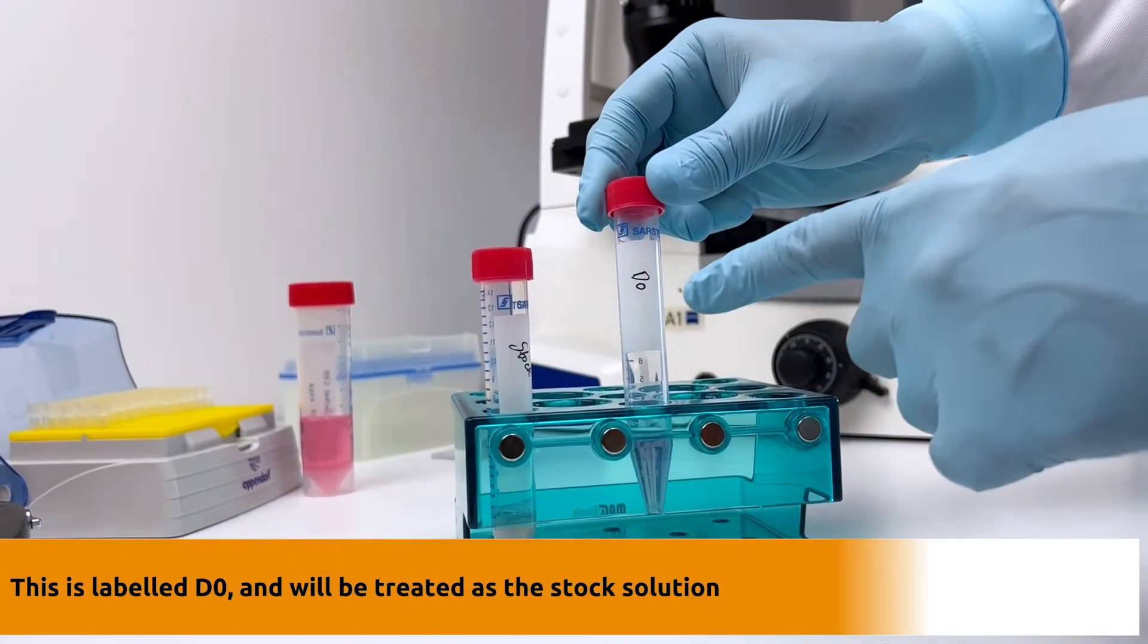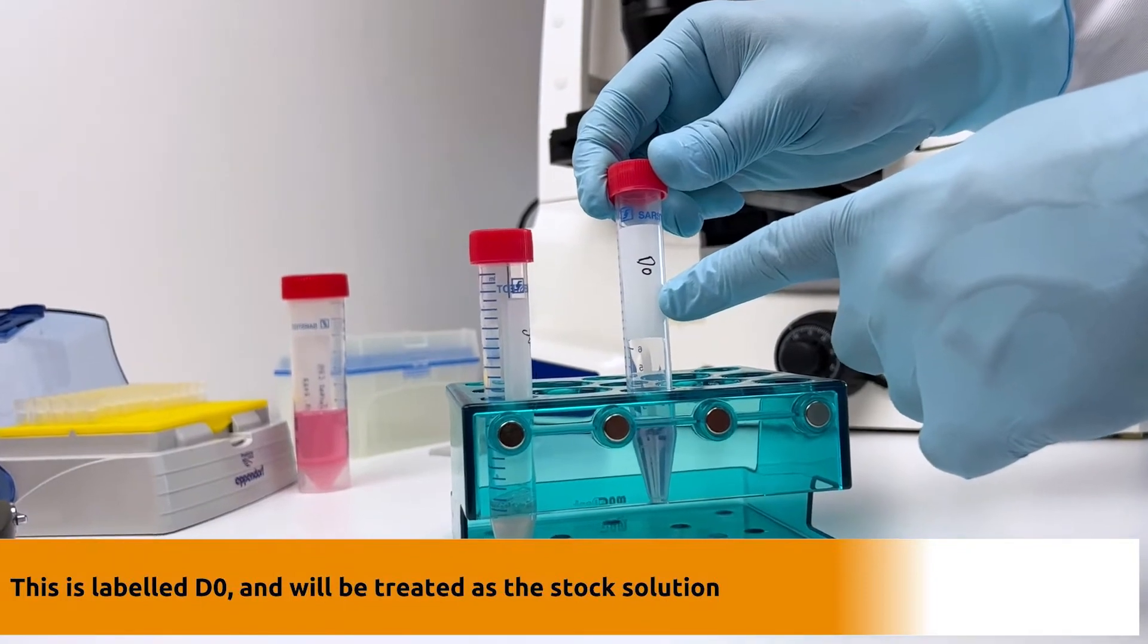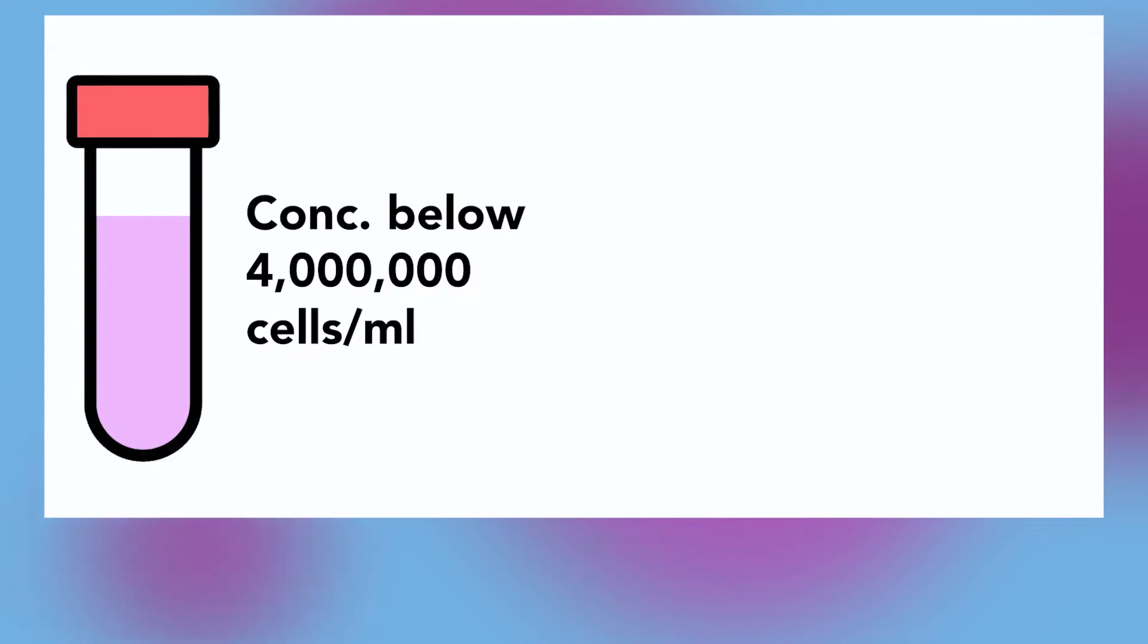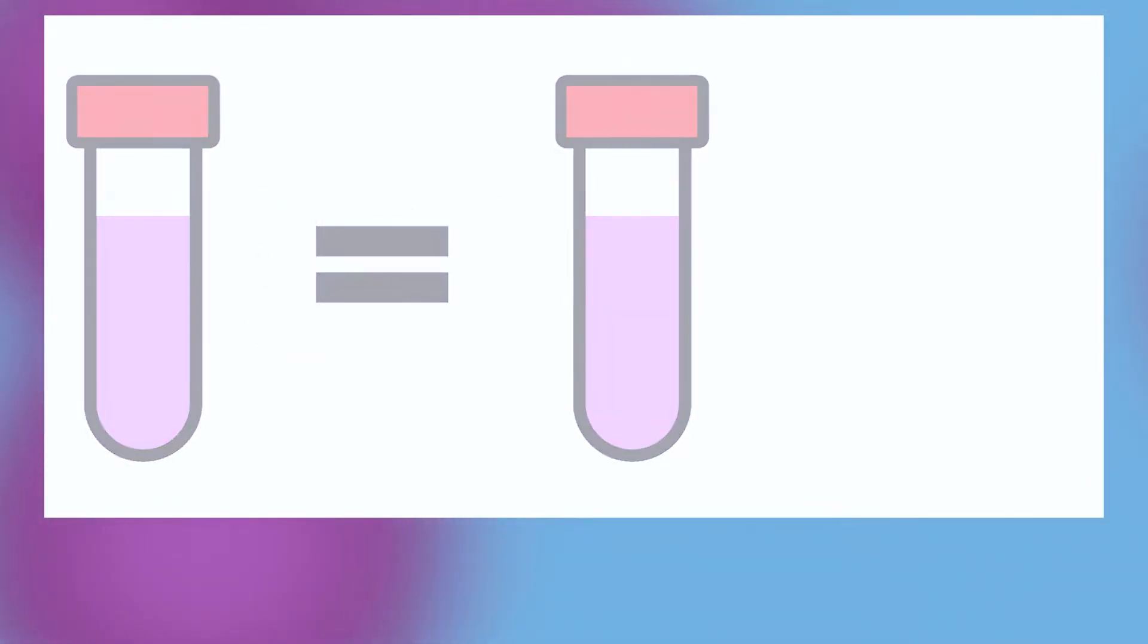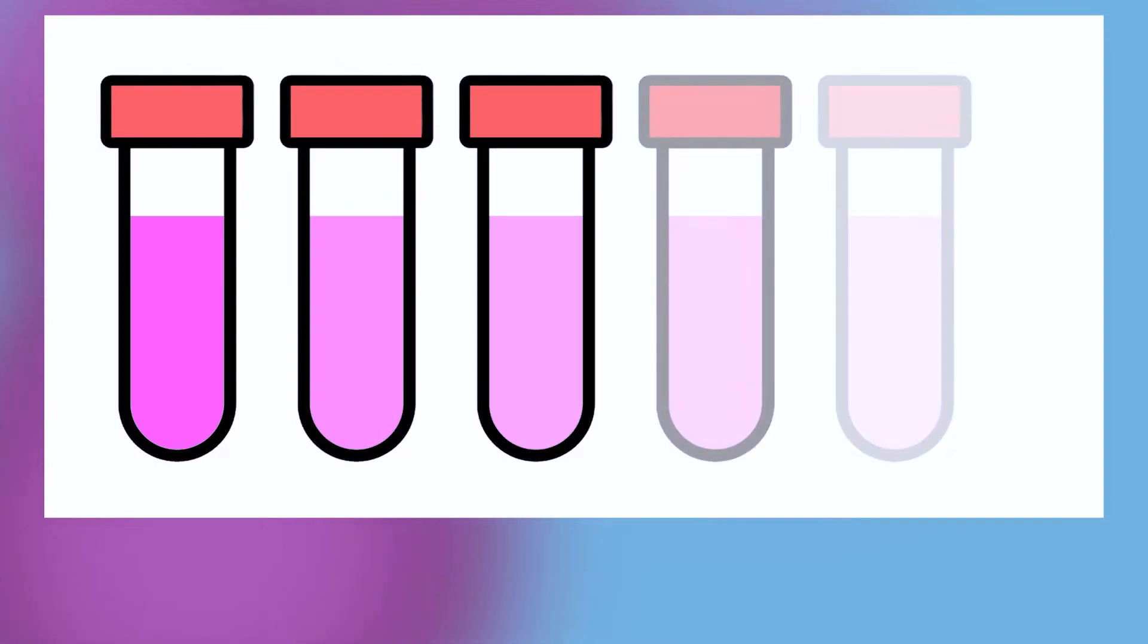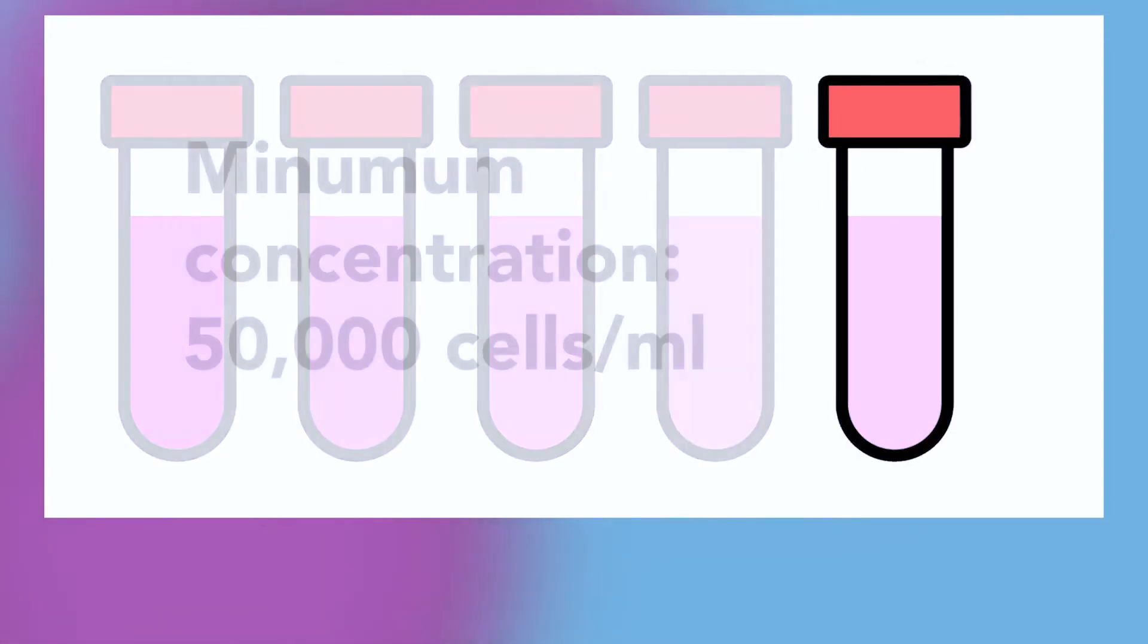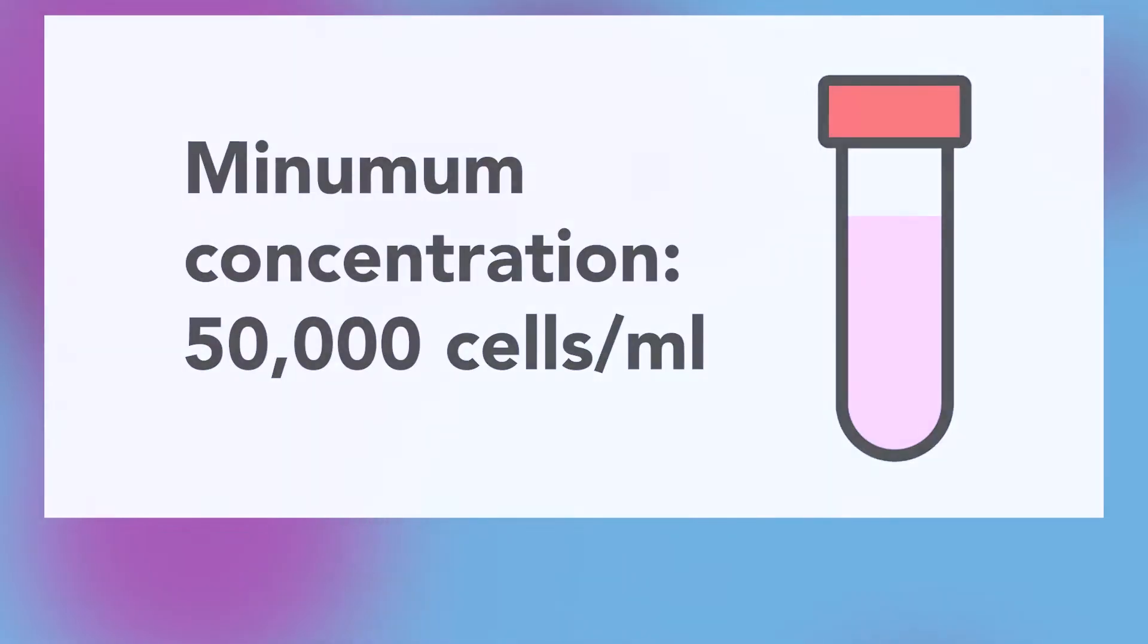This solution is labeled D0 and will be treated as a stock solution. However, if your sample concentration is below 4 million cells per milliliter, just take that concentration as D0 and make sure that in the serial dilutions, your concentration never dips below the rated concentration of 50,000 cells per milliliter.